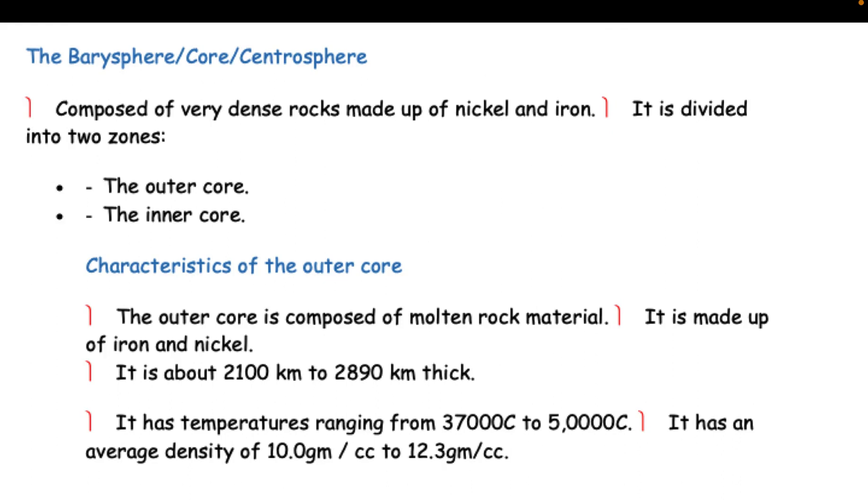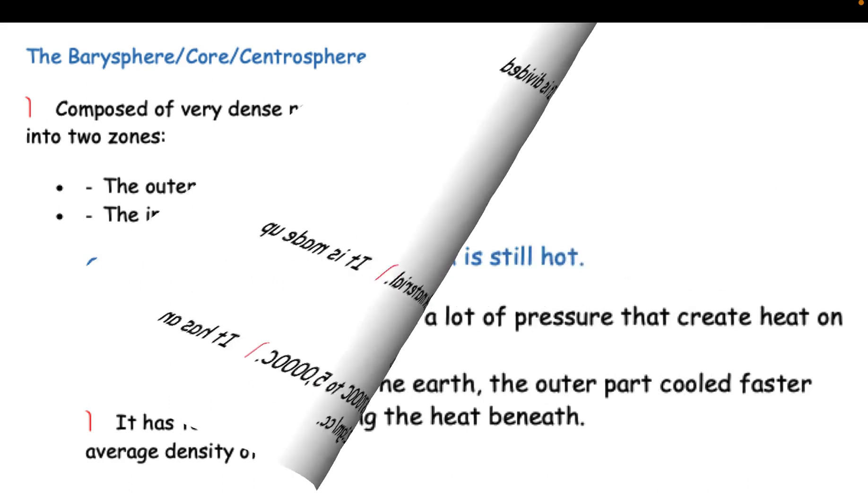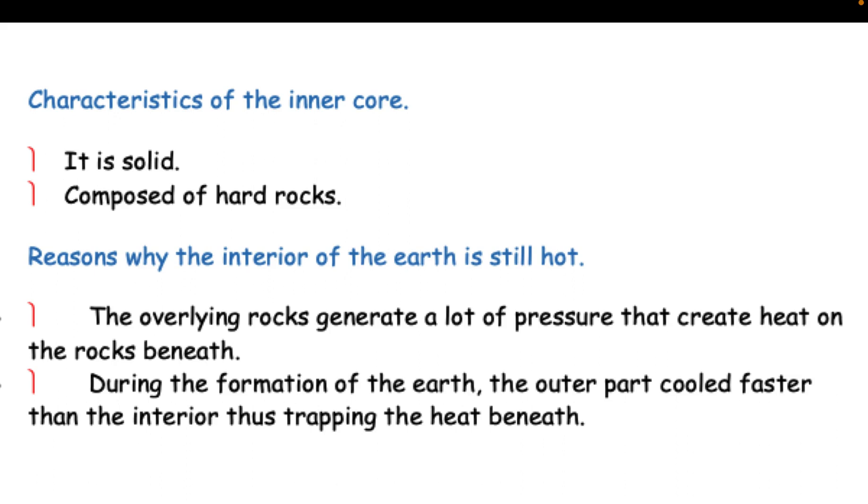The barysphere: core or centrosphere, composed of very dense rocks made up of nickel and iron. It is divided into two zones: the outer core and the inner core. Characteristics of the outer core: composed of molten rock material, made up of iron and nickel. It is about 2,100 to 2,890 kilometers thick. It has temperatures ranging from 3,700°C to 5,000°C. It has an average density of 10.0 to 12.3 gm per cc. Characteristics of the inner core: it is solid, composed of hard rocks.